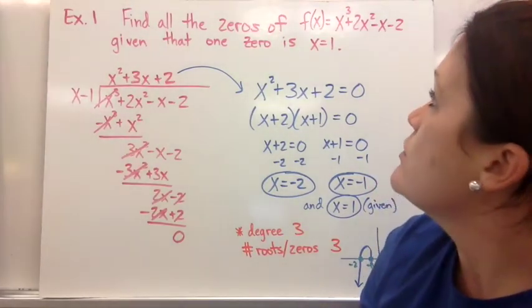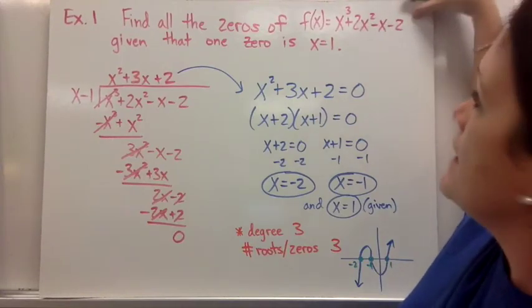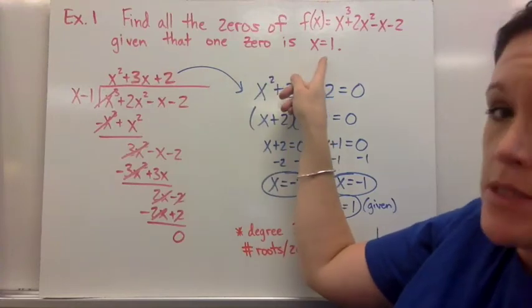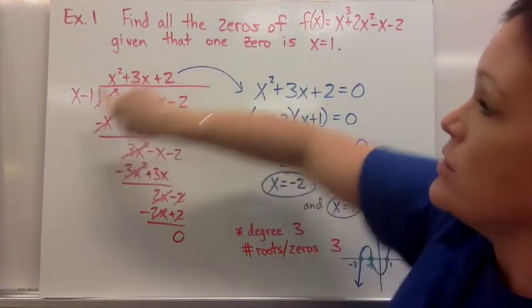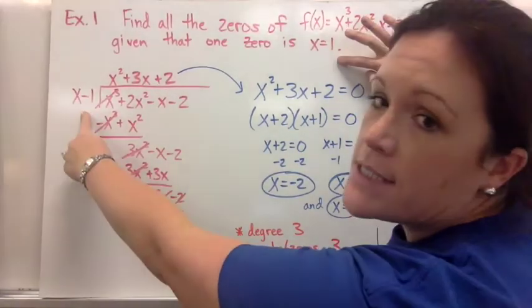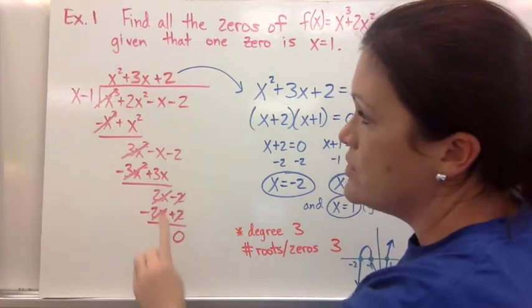Find all the zeros of f(x) = x³ + 2x² - x - 2, given that one zero is x = 1. So if they've given you a zero, you can write that as a factor. Remember when we worked on factoring, if x = 1, the factor it would come from is x - 1.